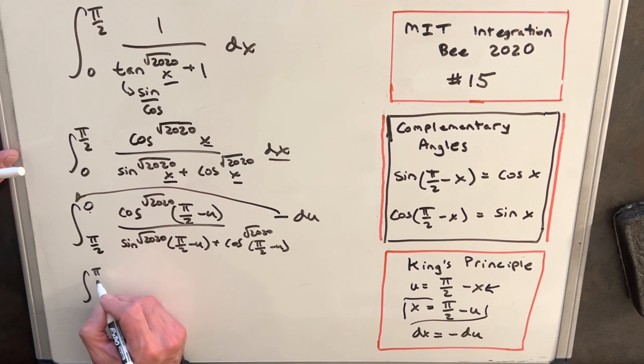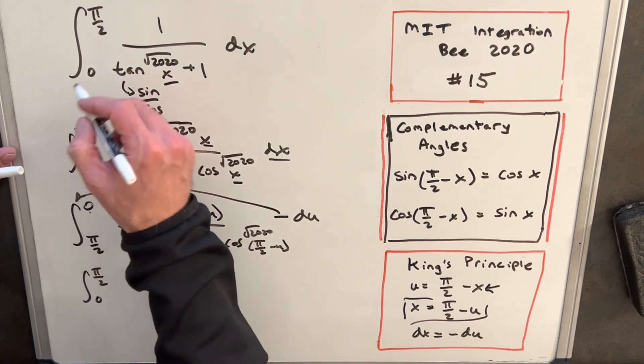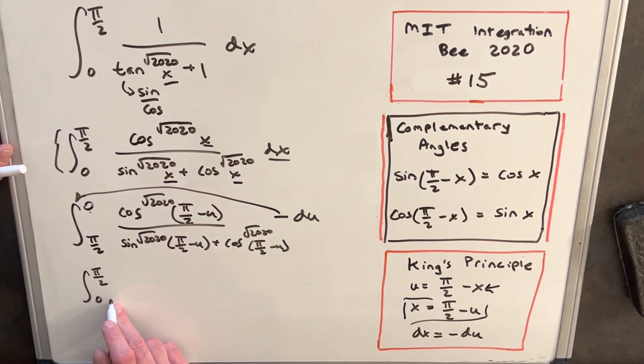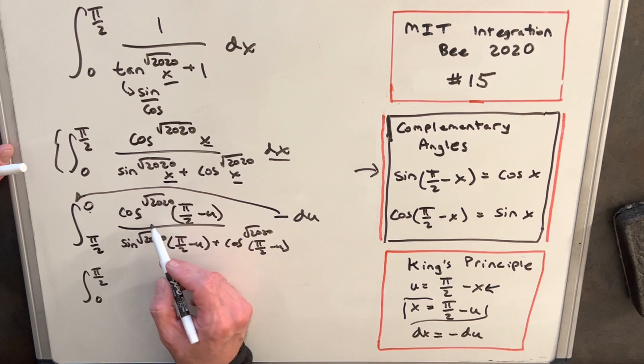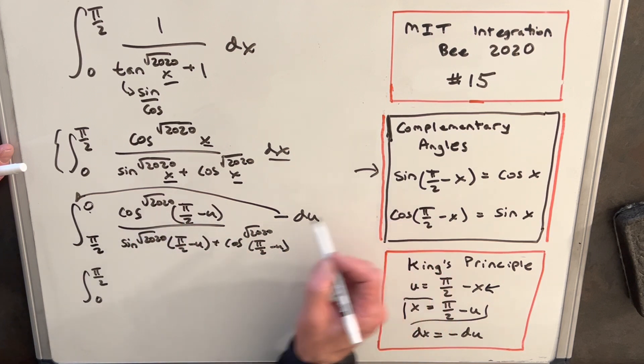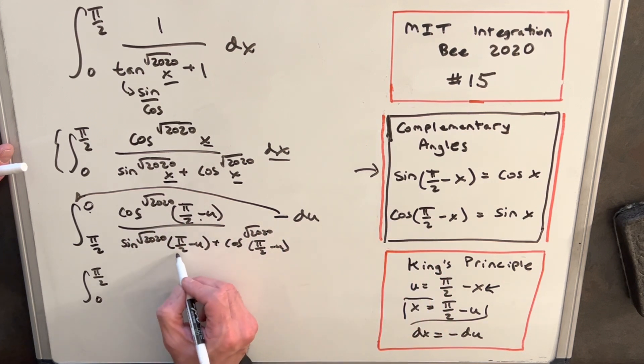So now we're going to put this back to where it was, back with our original bounds pi over 2 to 0 using that minus sign. And then you'll notice this is where we use the complementary angle formula over here. Our cosine of pi over 2 minus u is going to be sine u. This one, a sine of pi over 2 is going to be cosine u, and so we can change each of these terms.